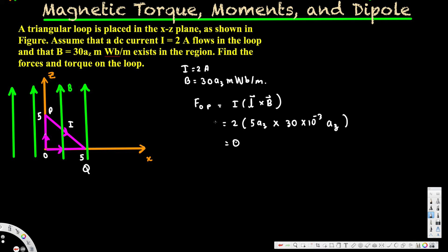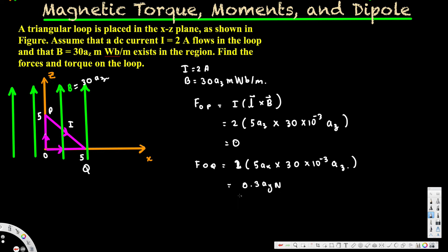Now let's look at OQ. F_OQ uses the same equation: i × L × B. i = 2 ampere, length = 5 in the x direction, so 5ax, crossed with the magnetic field 30 × 10⁻³ az. ax cross az gives us negative ay. Calculating this gives 0.3ay Newton. That is the force on OQ.